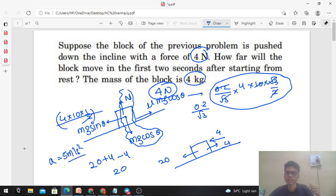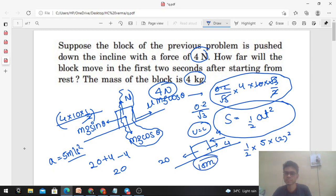Once you've got the acceleration, you can easily find out the distance traveled by this body in 2 seconds. Initial velocity is 0, so distance is half of at square. Half into acceleration is 5 into t is 2 square, so this is 10 meter. The block will travel 10 meter distance.